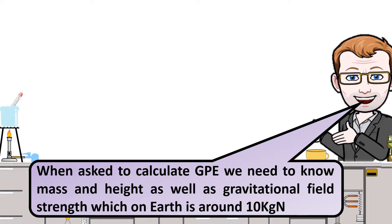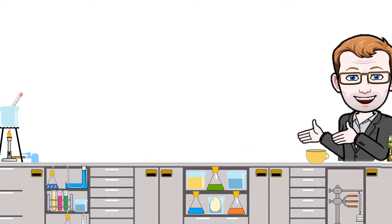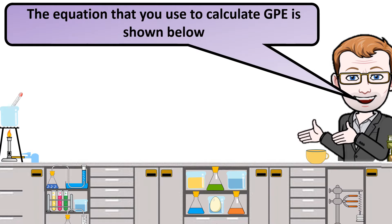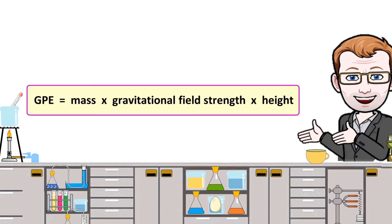To calculate gravitational potential energy we need to know the mass, the height, as well as the gravitational field on Earth, which is around 10 newtons per kilogram. The equation is: gravitational potential energy equals mass times gravitational field strength times height.